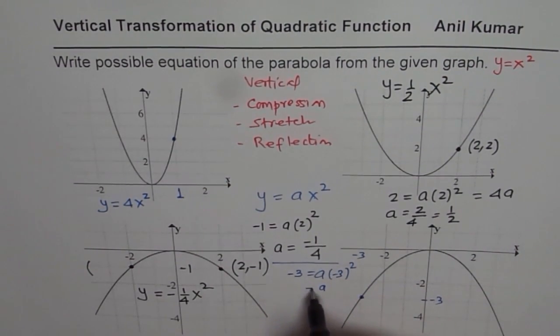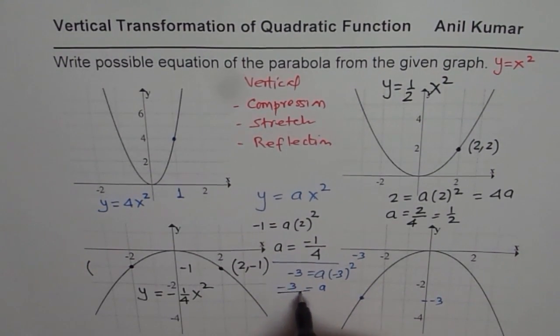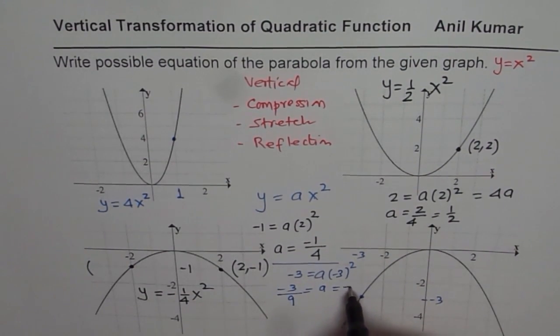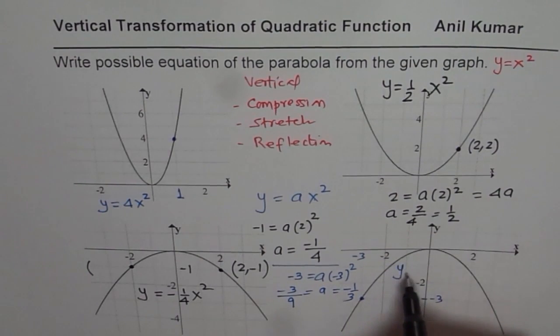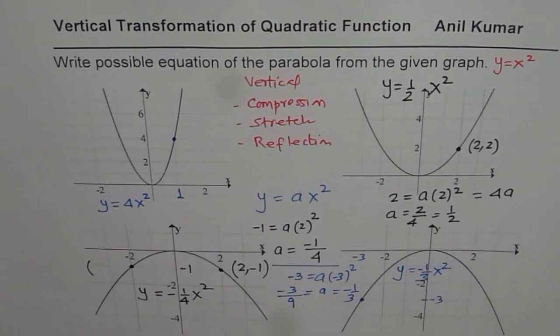Or, a equals to minus 3 divided by 9. That gives you a value as minus 1 over 3. So, that means I could write this equation as y equals to minus 1 over 3 x square.